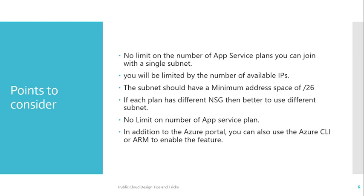Fourth, if different app service plans have different outbound traffic rules — meaning you want to control outbound traffic using different NSG rules linked to your subnet or virtual network — there is no benefit to using the same subnet. In that case, you need to segregate to different subnets so you can apply two different NSG groups to two different app service plans. Make sure you have the same NSG group before applying app service multi-plan subnet integration.